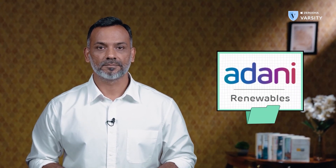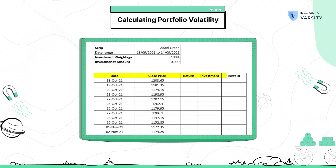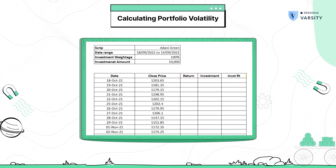To demonstrate this, let us start by assuming that my portfolio contains a single stock — I've taken the example of Adani Green. I'll calculate the portfolio risk of this single stock portfolio using the last one year's closing prices, which you can download freely from the exchanges' website. I'm doing this on MS Excel, but you can use any spreadsheet.